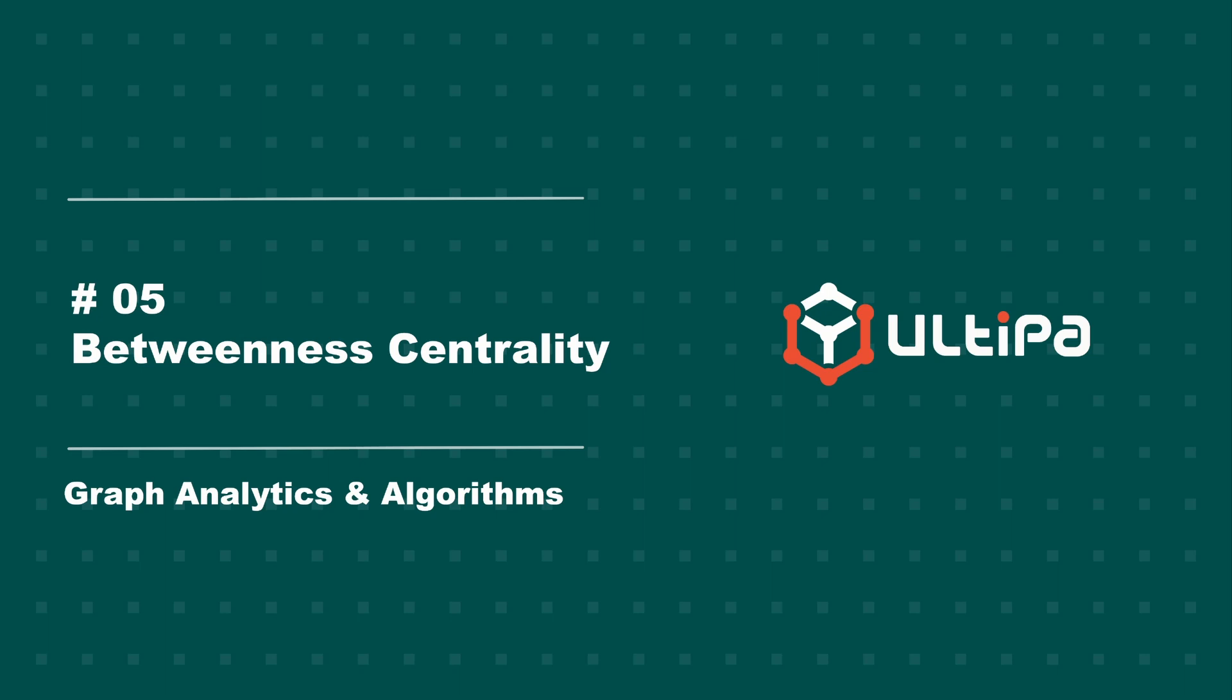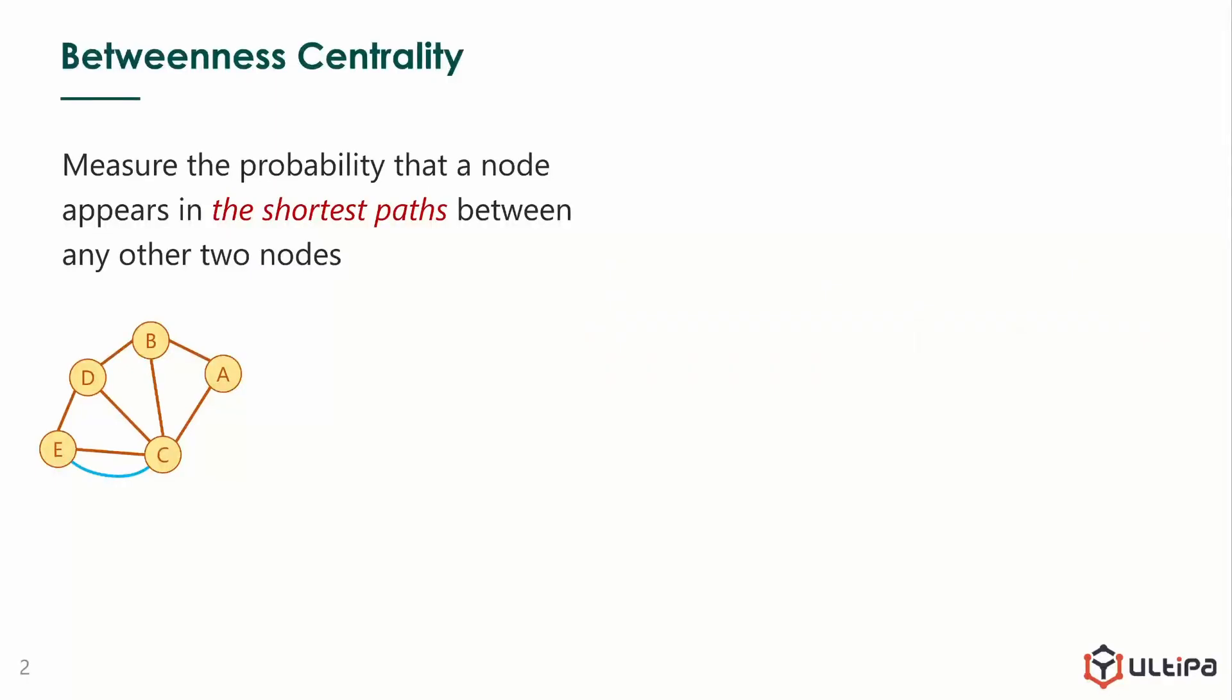This video is about betweenness centrality, part of our graph analytics and algorithms series. Betweenness centrality measures the probability that a node appears in the shortest path between any other two nodes.